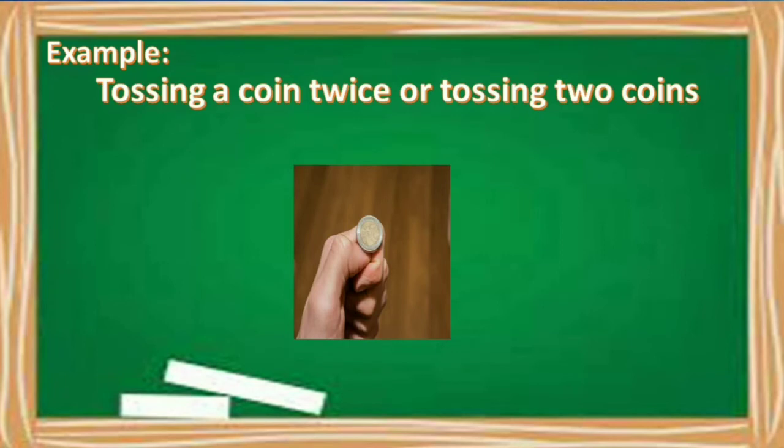Okay, so for example, we have a given experiment. Say, tossing a coin twice or tossing two coins. So kung ang experiment natin ay magtotoss tayo ng coin, say dalawa yung itotoss natin na coins, ano yung posibleng maging outcome? Pwedeng ang lumabas pagka nag-toss tayo ng coin ay head or pwede rin tail. Okay, so dito sa given experiment na ito, pwede tayong pumili ng ating magiging random variable.